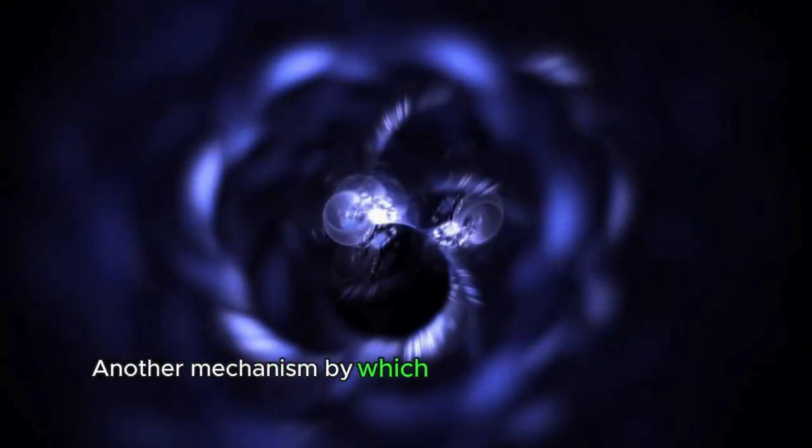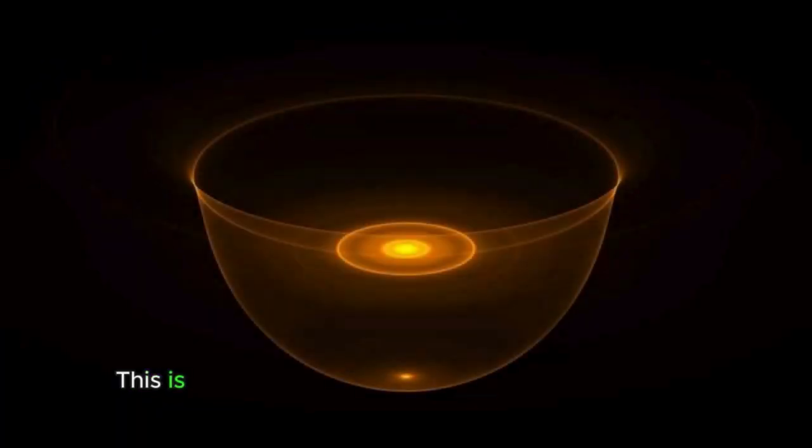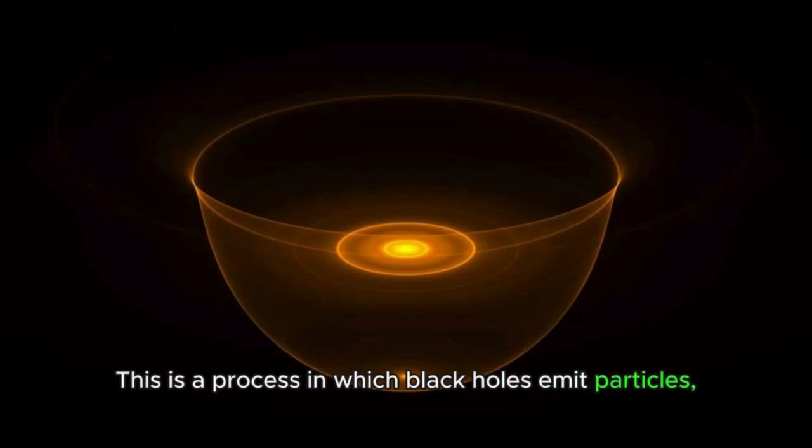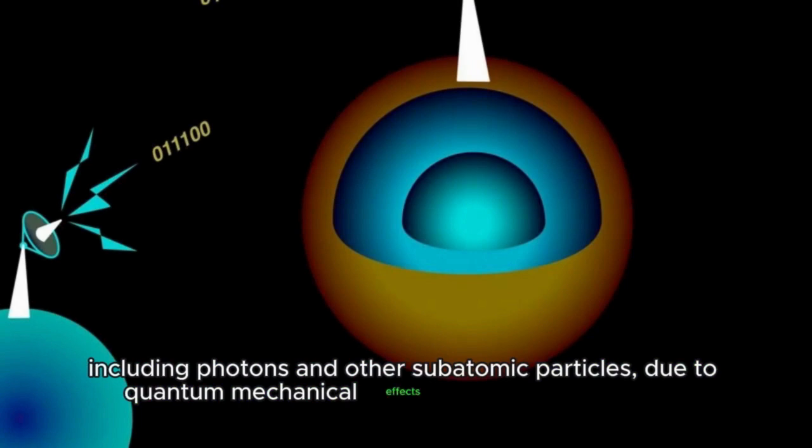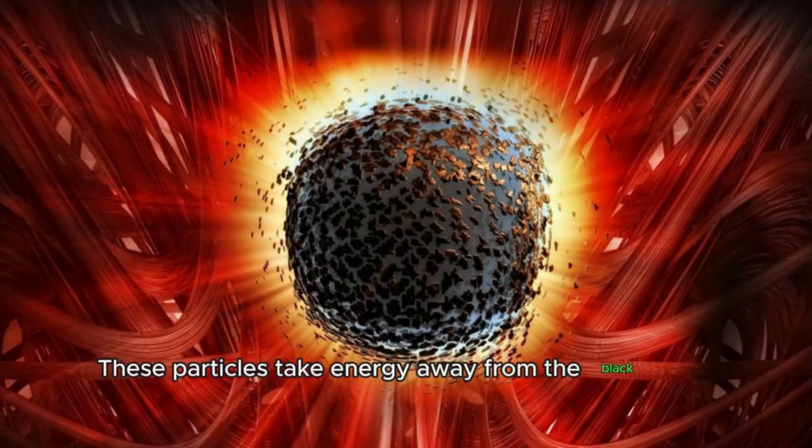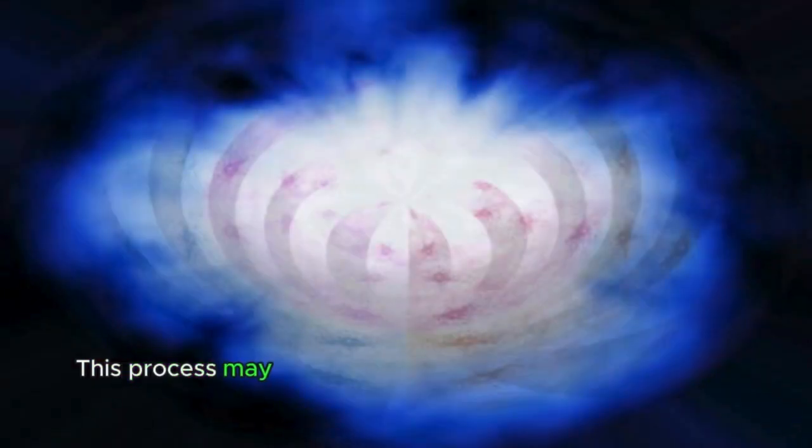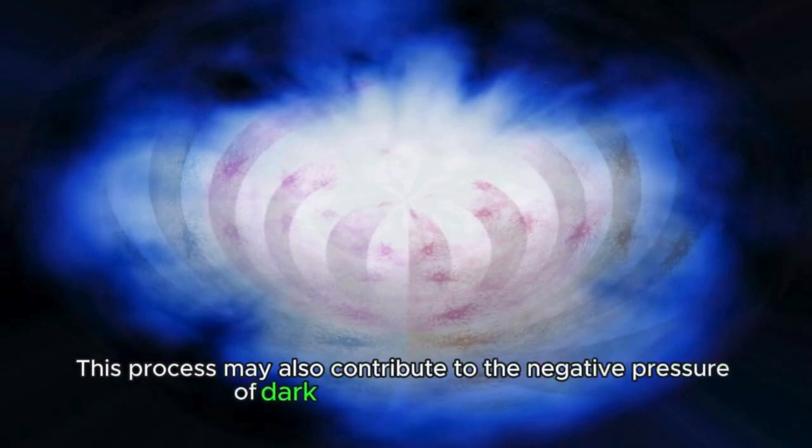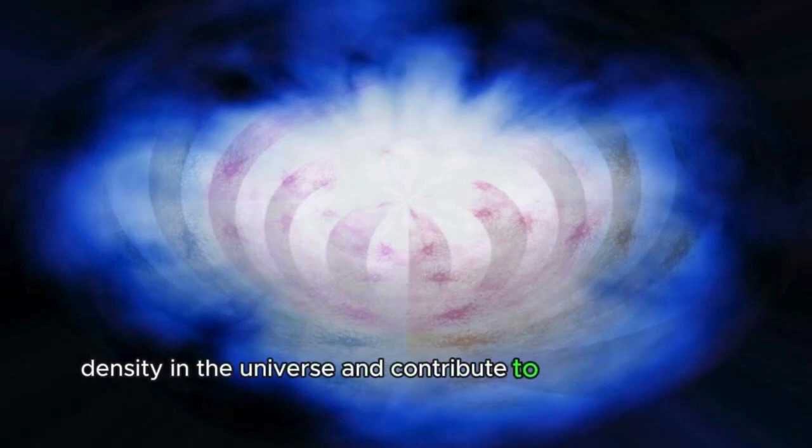Another mechanism by which black holes can generate dark energy is Hawking radiation. This is a process in which black holes emit particles, including photons and other subatomic particles, due to quantum mechanical effects on the event horizon. These particles take energy away from the black hole, causing it to lose mass and shrink over time. This process may also contribute to the negative pressure of dark energy in the universe, since the energy emitted by black holes is believed to be related to the total energy density in the universe and contribute to the acceleration of its expansion.